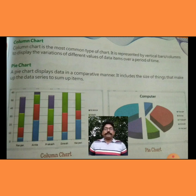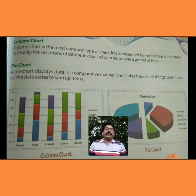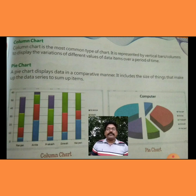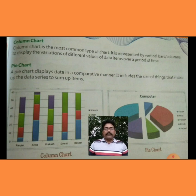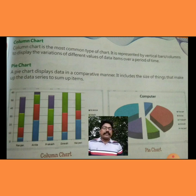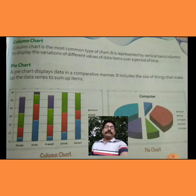Second is Pie Chart. A pie chart displays data in a comparative manner. It includes the size of things that make up the data series relative to the sum of items. Pie chart आपको comparison type से मिलता है, जैसे science में या SST में atmosphere के compositions और gases को किस तरह से दिखाया जाता है — वो pie chart में ही show किया जाता है, ताकि ज्यादा से ज्यादा understandable रहे। यहाँ पर दोनों के figures दिए गए हैं — column chart के और pie chart के, जैसा कि आप देख सकते हैं।